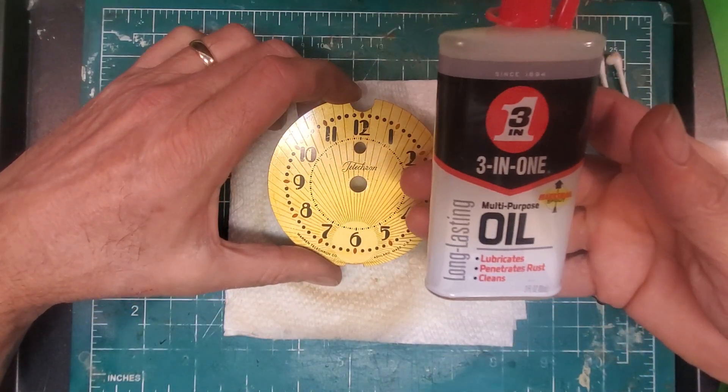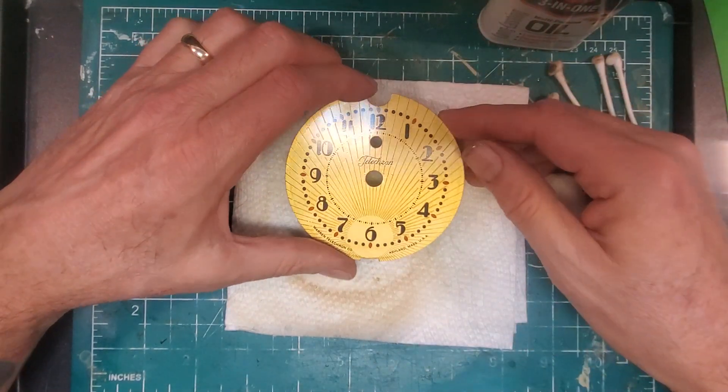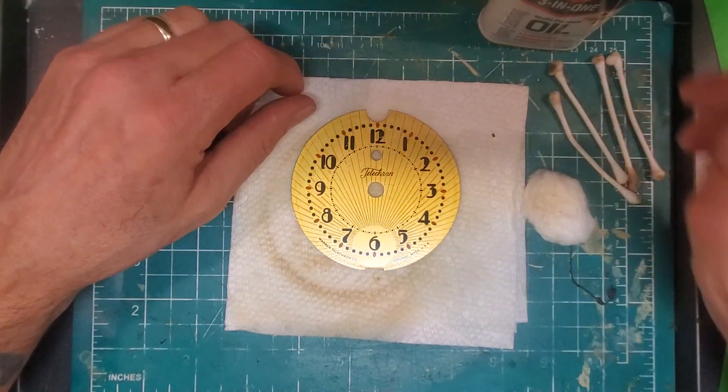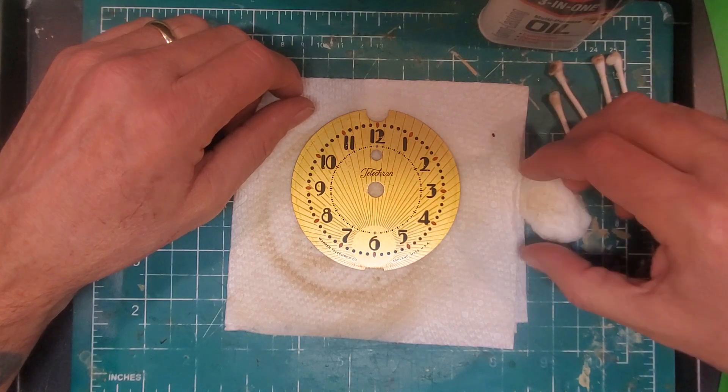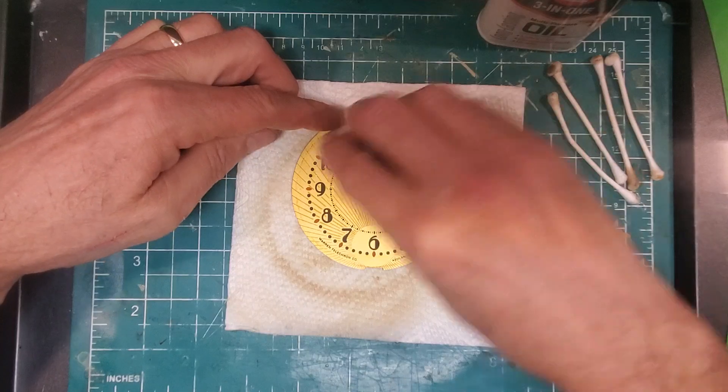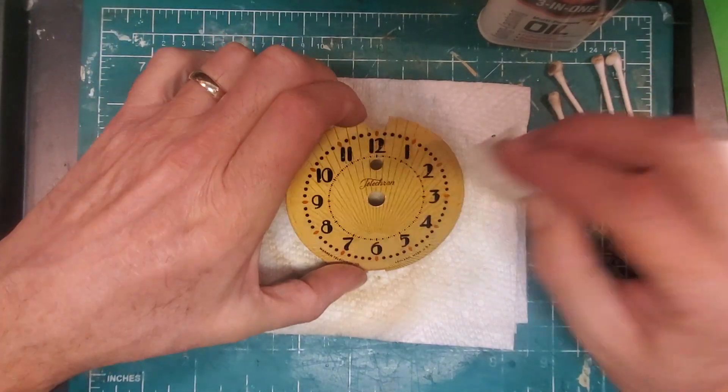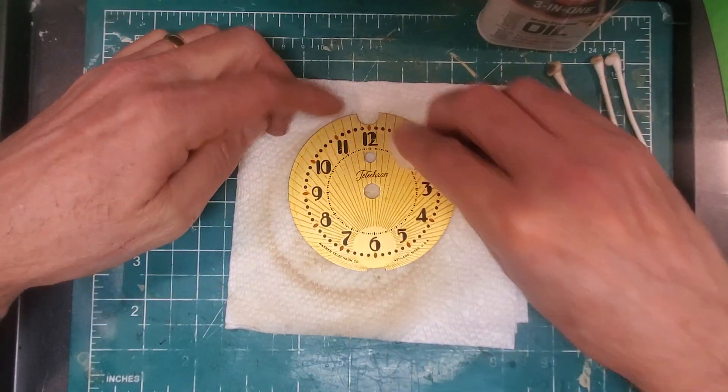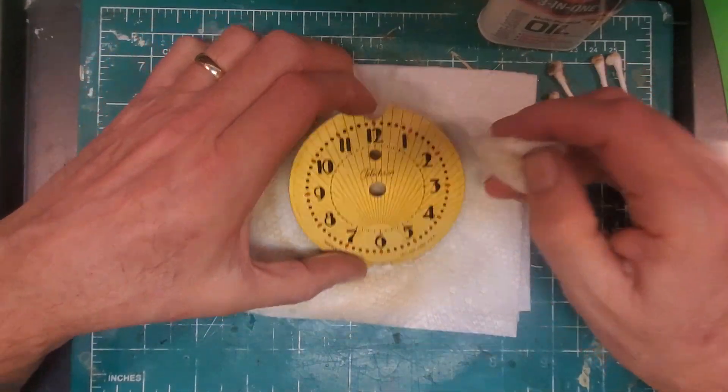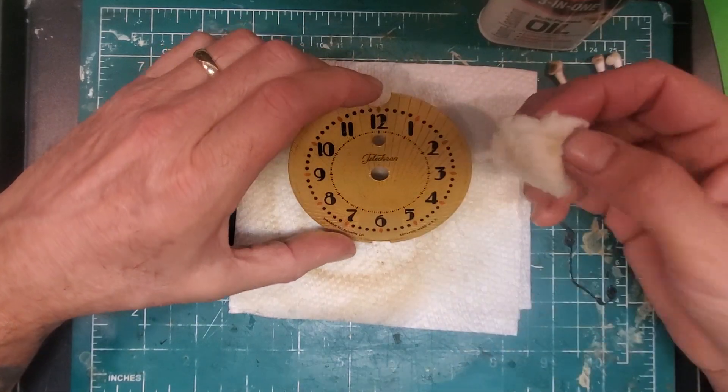What I found is take three-in-one oil and put it on this face, and then by using cotton balls and cotton swabs you can remove it. It's a slower process, doesn't happen all at once, but you can remove the rotor oil and get the face back the way it was.